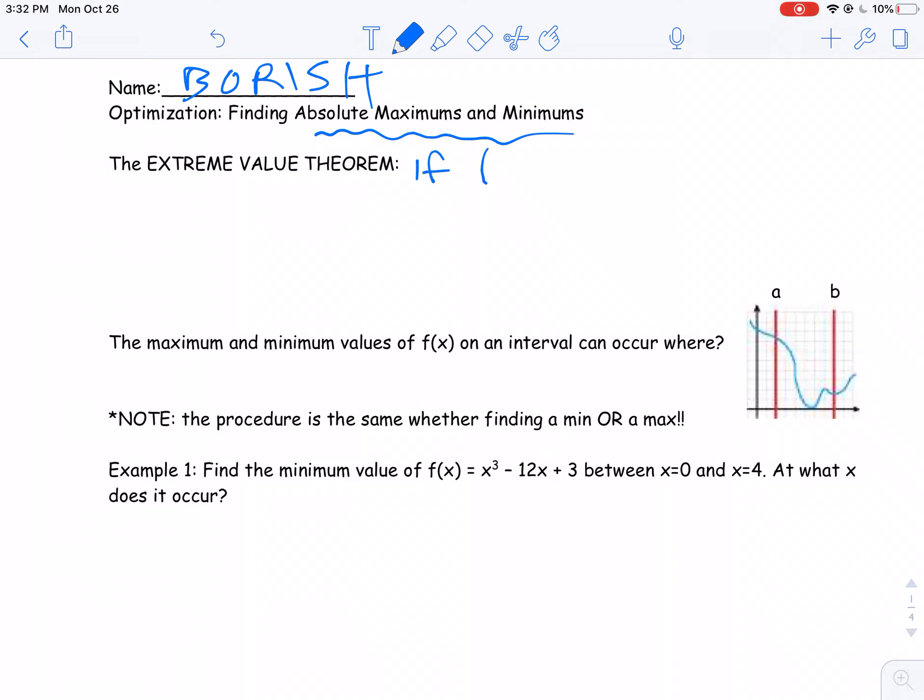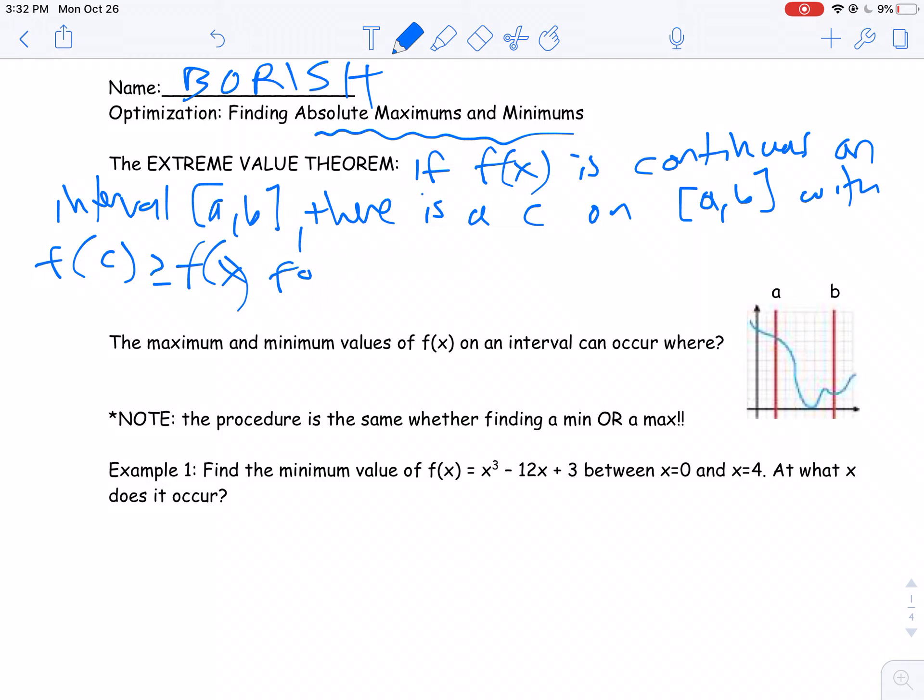So the Extreme Value Theorem says this: If you have some function, and that function is continuous on the closed interval from a to b, there must be a c. There is a c somewhere on the interval from a to b with f of that c being greater than or equal to f of x for all x on the interval from a to b. So what this is saying is there is some point, some c, where that point is greater than or equal to f of x. There is some absolute maximum. And same with an absolute min.